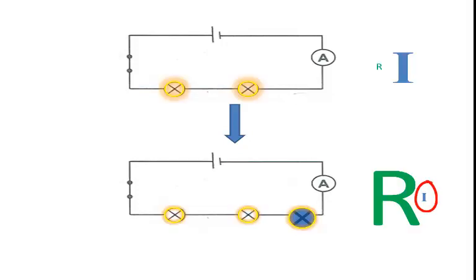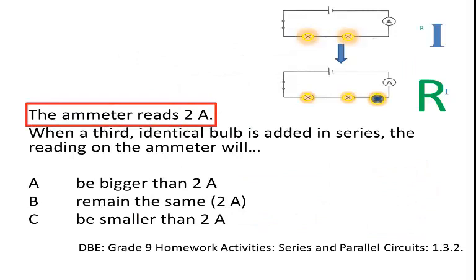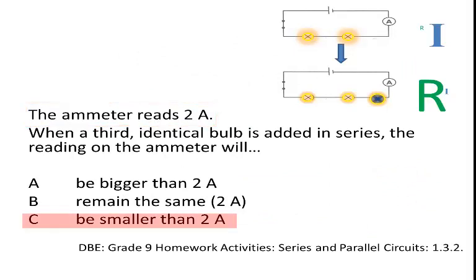It's going to decrease it, because it will be more difficult for the charge to move around the circuit. So the current strength will be less than it was before. It was 2 amps before. Now it will be smaller than 2 amps.